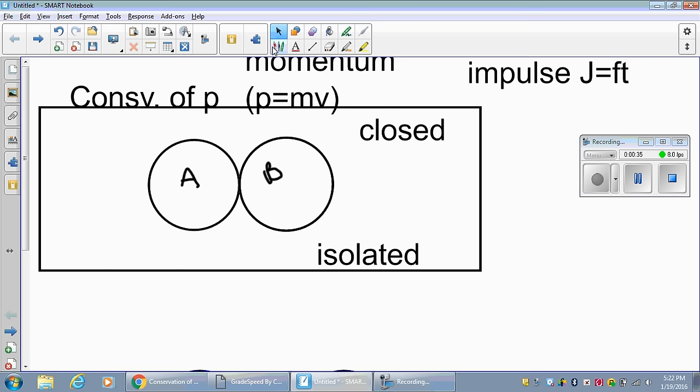Closed means that if I have a two kilogram object and a two kilogram object, if I add these up, the total mass is four kilograms. I'm not going to gain or lose any mass. It has to be four kilograms before and after no matter what.